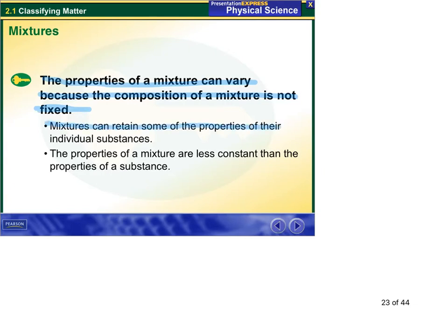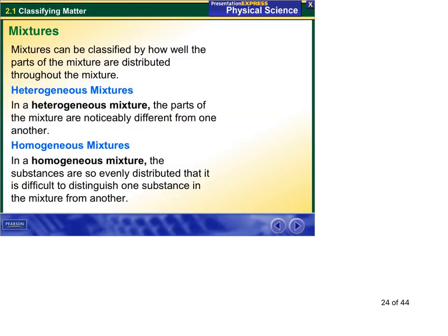Mixtures retain some of the properties of the individual substances. Properties of mixture are less consistent than the properties of a substance. We got a couple different kinds of mixtures: heterogeneous and homogeneous. Heterogeneous mixture: parts of the mixture are noticeably different from one another. Typically you can see these different parts.